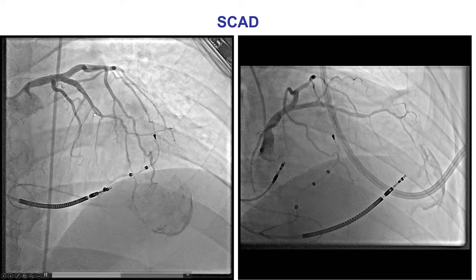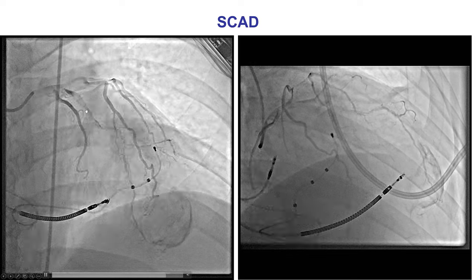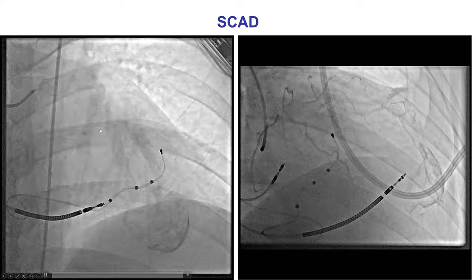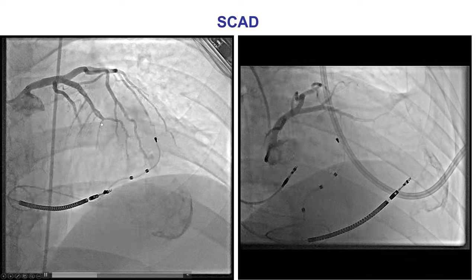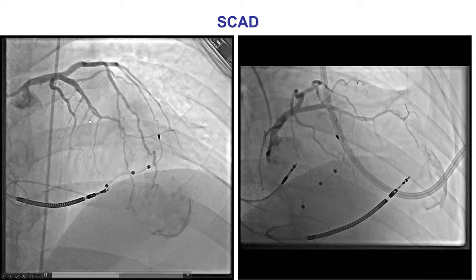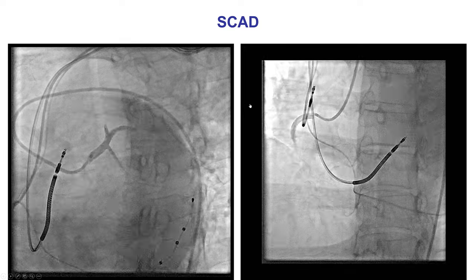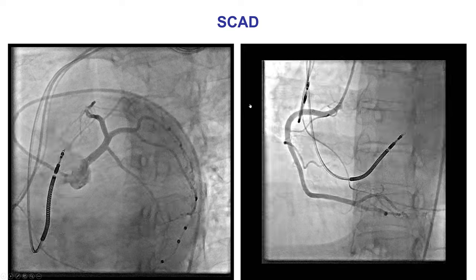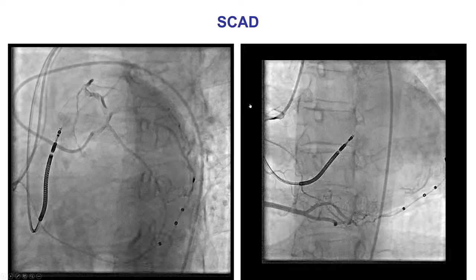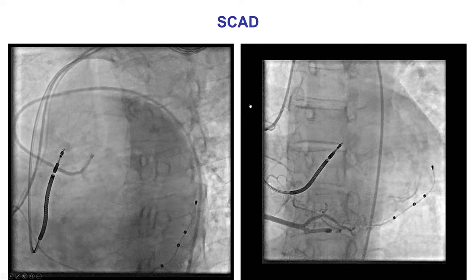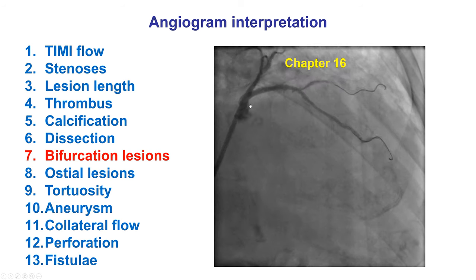Sometimes coronary dissection can be spontaneous. This is an example of spontaneous coronary artery dissection (SCAD), which usually occurs in women in the peripartum period, but can happen in other patients as well. SCAD can sometimes have multifocal involvement.